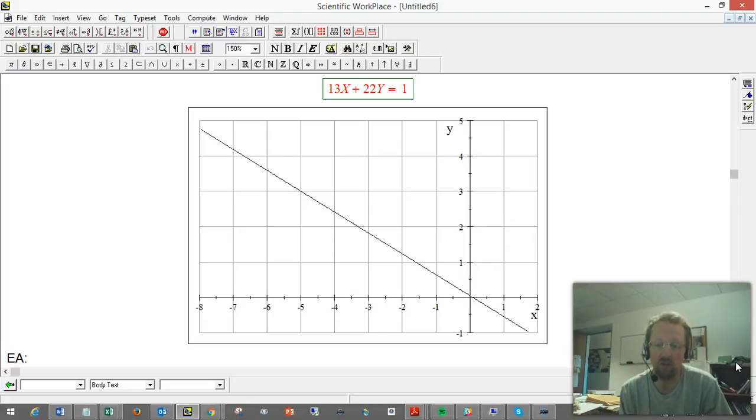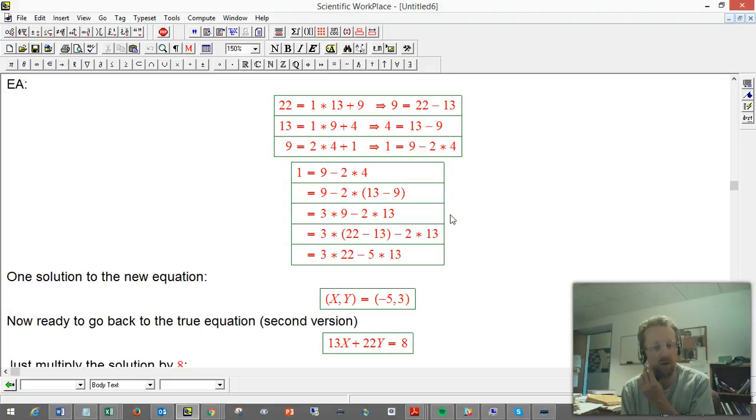But let's see how the Euclidean algorithm does that. This is pretty much a review of the earlier process. We use the Euclidean algorithm on twenty-two and thirteen. So twenty-two is one times thirteen with the remainder nine. We can solve that for the remainder and just have that sitting there waiting to be used in a minute.